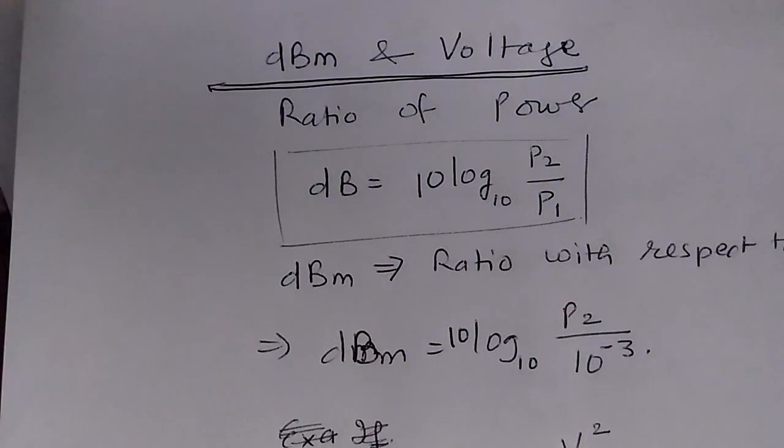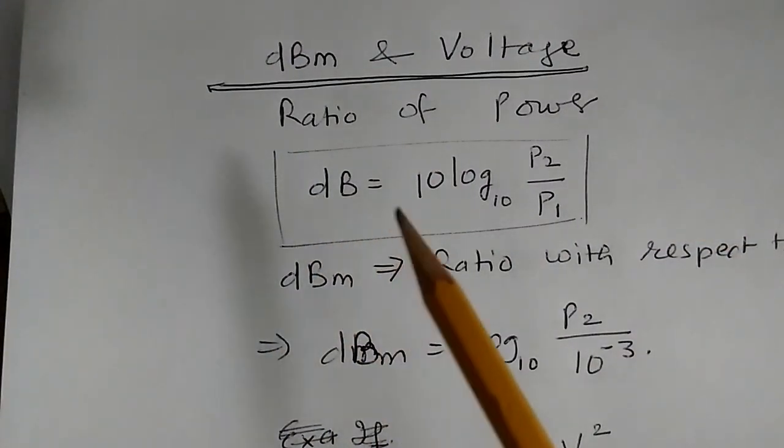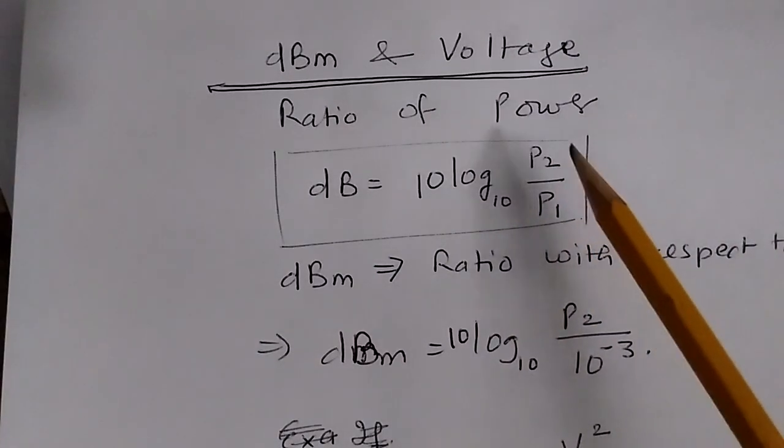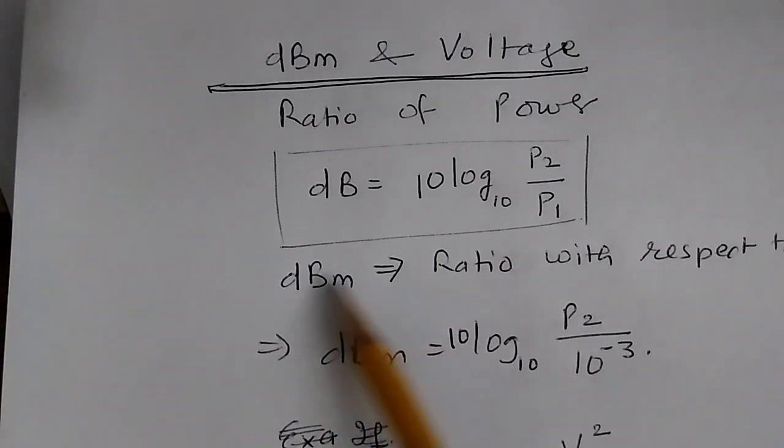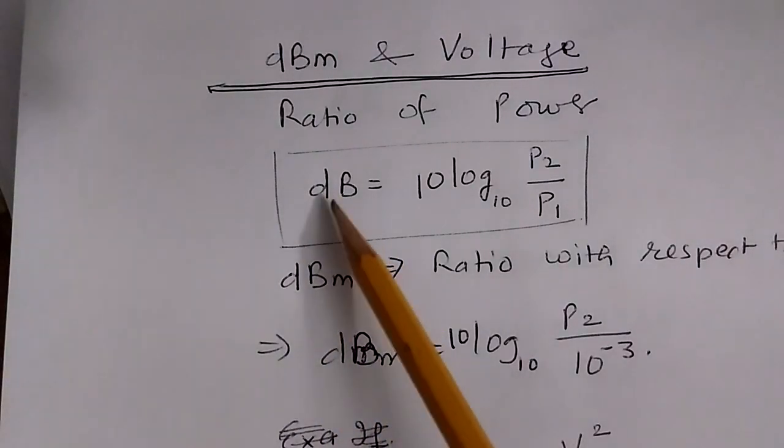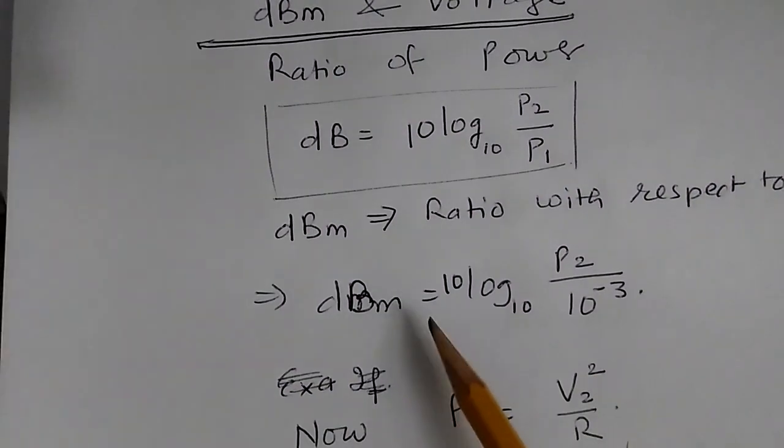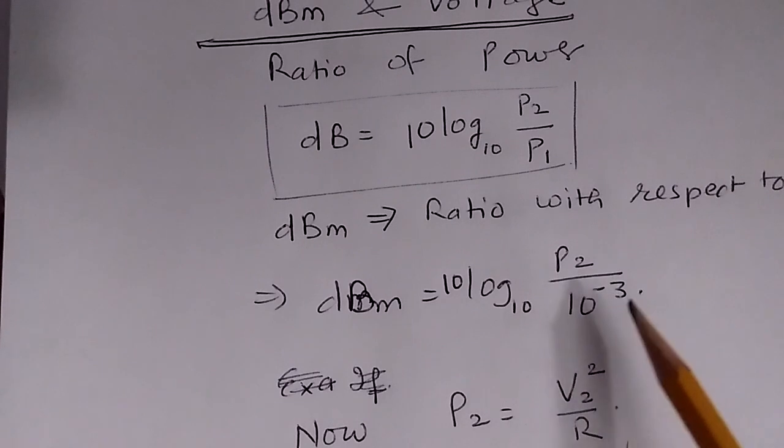Now when we don't know what the initial power was, we express it as dB. But when we fix the reference power with respect to which we are measuring, we call it dBm. dBm is an absolute value.